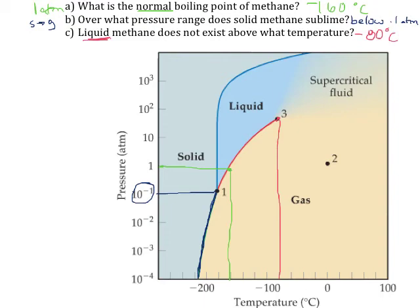You're going to want to make sure you understand how to read these phase diagrams. Realize that they're going to look very similar for different substances — you're going to have the solid, liquid, and gas in roughly the same location, but the scales of temperature and pressure can change. The slopes of these lines will change slightly depending on whether you're dealing with water, carbon dioxide, or something like methane.